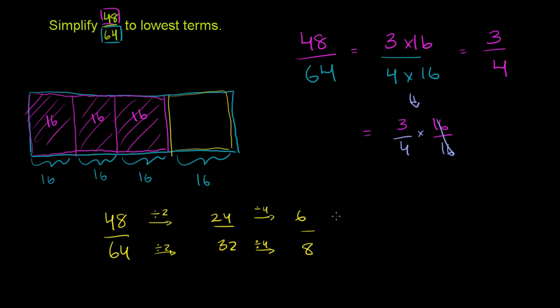And these are both divisible by 2. So if you divide the numerator by 2, you get 3. You divide the denominator by 2, you get 4. And so this is the simplest possible terms. Because 3 and 4 share no common factors greater than 1. So we're in lowest possible terms.